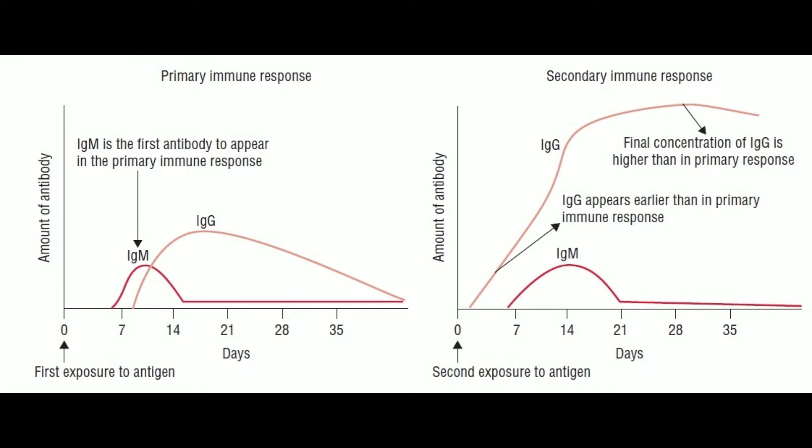Characteristic #1 - Definition: The primary immune response is the reaction of the immune system when it contacts an antigen for the first time. The secondary immune response is the reaction of the immune system when it contacts an antigen for the second and subsequent times.